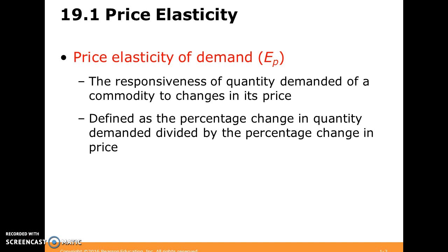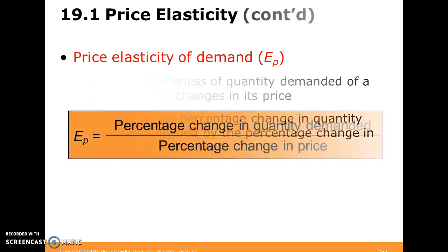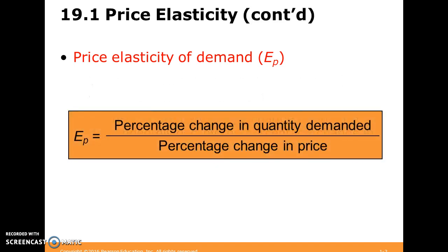So first, we want to think a little bit about price elasticity. All this is is a measure of how responsive quantity demanded of a commodity is to a change in its price. We define it as the percent change in quantity demanded divided by the percent change in price. Here's a formula you can look at, and this is pretty important to know — not only for demand, but for supply as well. A lot of these concepts for demand will be relatable to supply. So this is the formula for price elasticity of demand.